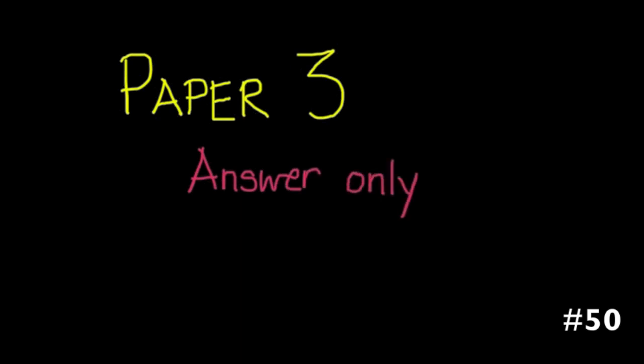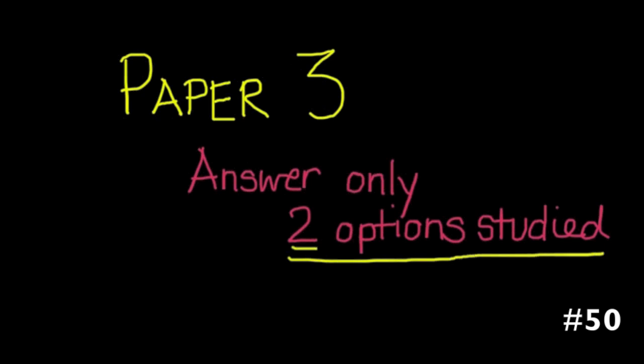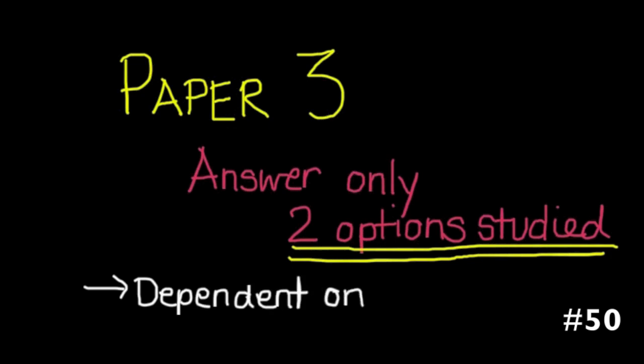On to paper 3. When you get to paper 3, please make sure that you only answer the options that you've studied in class. Don't answer another one just because it sounds familiar. For example, there is an option on ecology and there's a core on ecology. Sometimes students answer the option even though they haven't studied it. Big mistake. Please only answer the two options that you have studied. Remember that they're dependent on the core syllabus, so you have to go and review the connections with the core syllabus.